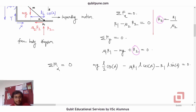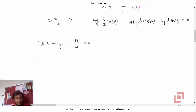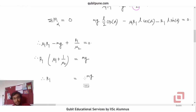Substituting R2 = R1/μ2 into the vertical equilibrium equation gives: μ1·R1 − mg + R1/μ2 = 0, which means R1·(μ1 + 1/μ2) = mg. Therefore R1 = μ2·mg / (μ1·μ2 + 1). This expression for R1 is then substituted into the moment equation.